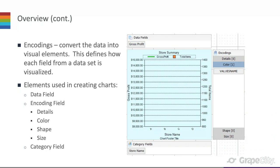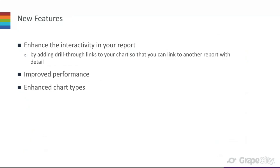Encodings convert data into visual elements — they define how each field from a dataset is visualized. There are three main elements: the Data Field, which contains values plotted along the Y-axis; the Encoding Field, which handles detail mapping, color mapping, shape mapping, and size mapping; and the Category Field, which groups the dataset into multiple categories for each unique value. For example, store name is broken into four categories — Store A, B, C, and D — on the X-axis.